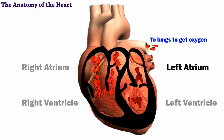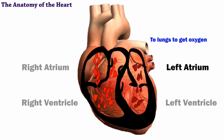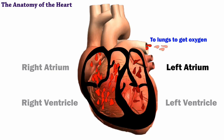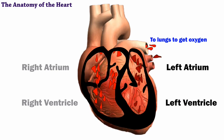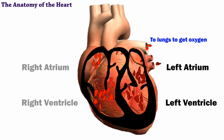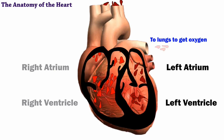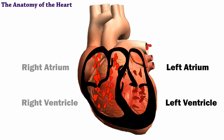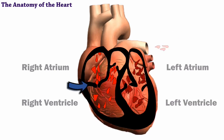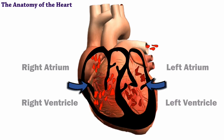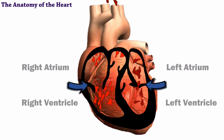The now oxygen-rich blood travels into the left atrium and into the left ventricle before your heart pumps it to the rest of the body. Each chamber is separated by the cardiac muscle and valves.